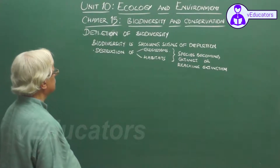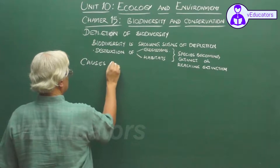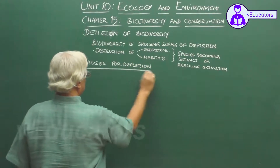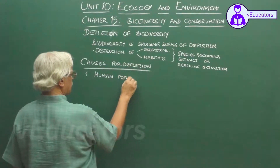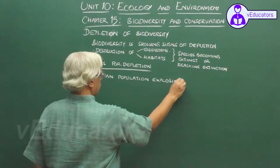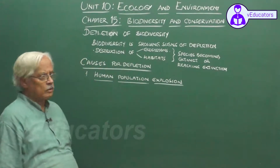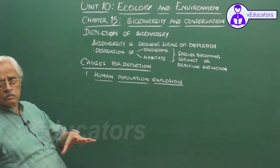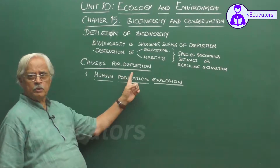The root cause of all these problems — if we list the causes for depletion of biodiversity — the first and foremost cause is human population explosion. The enormous and alarming rate at which the human population is increasing is the root cause of all problems that are individually and collectively contributing towards depletion of biodiversity.